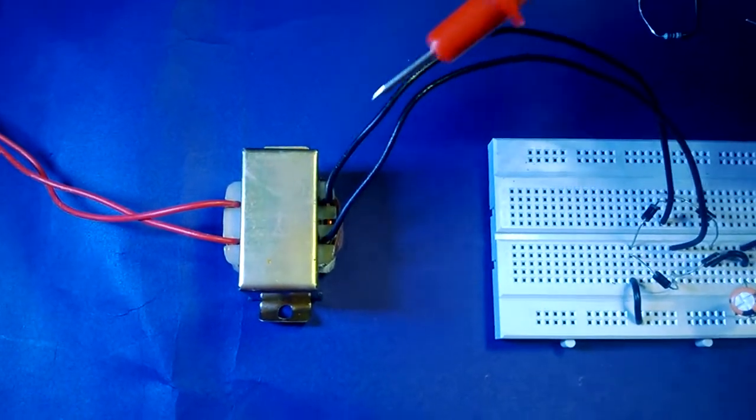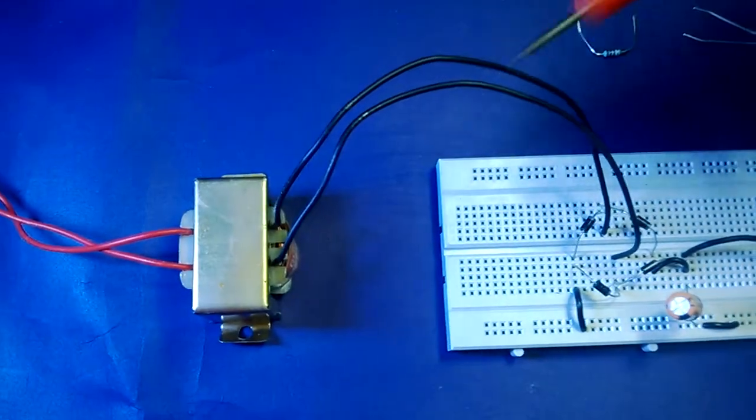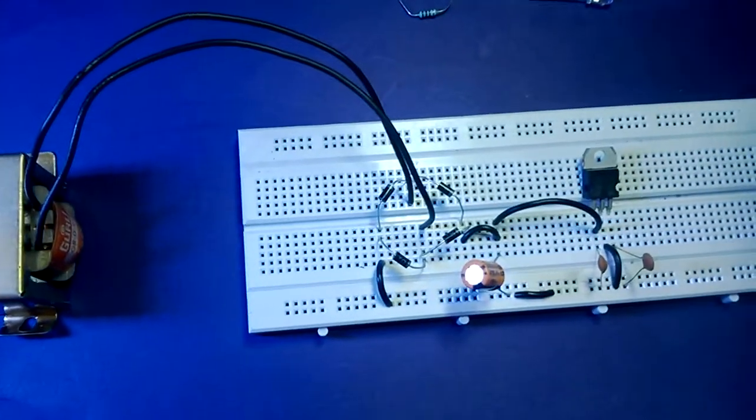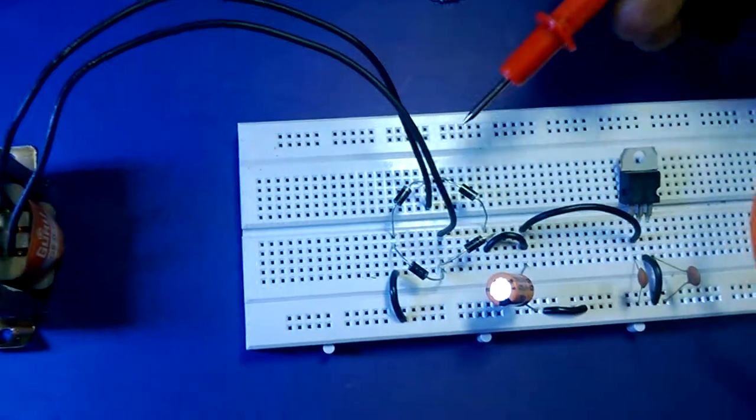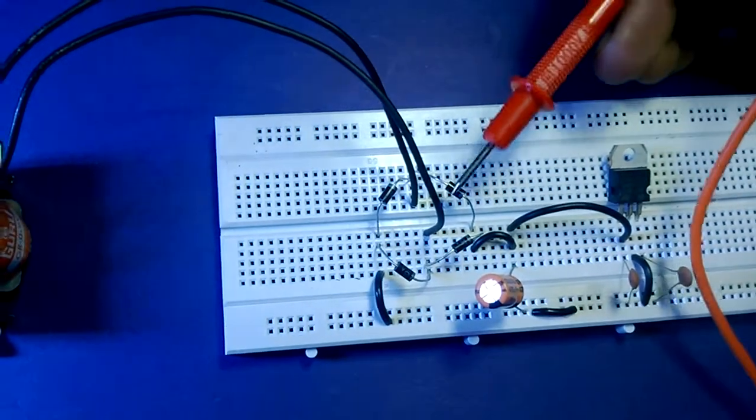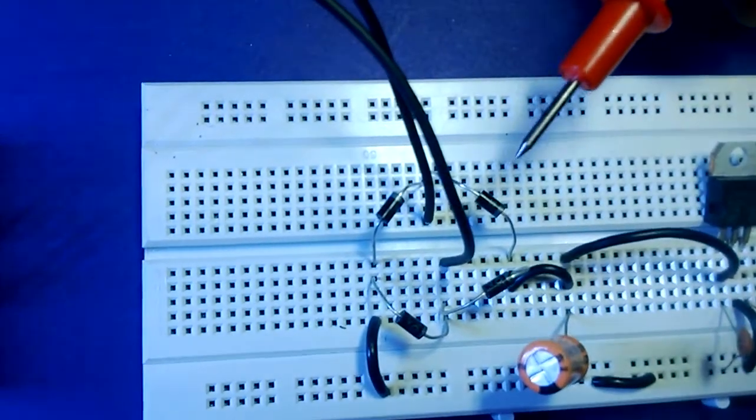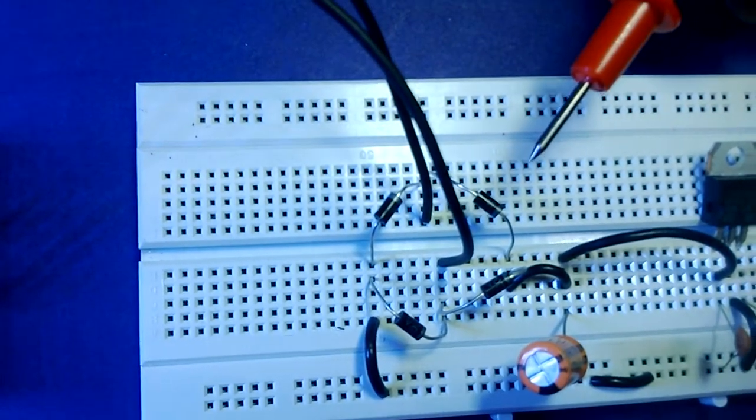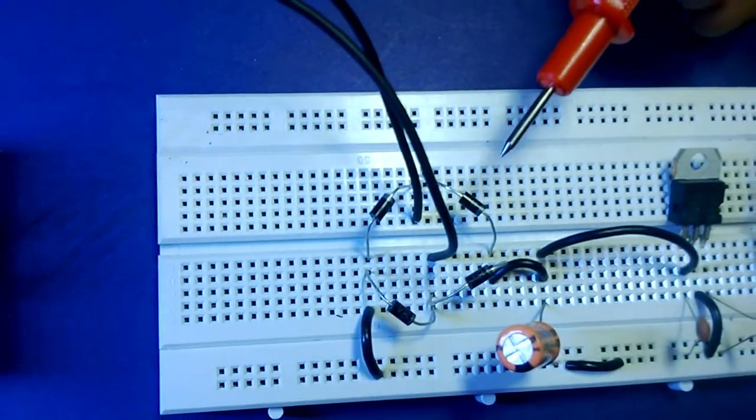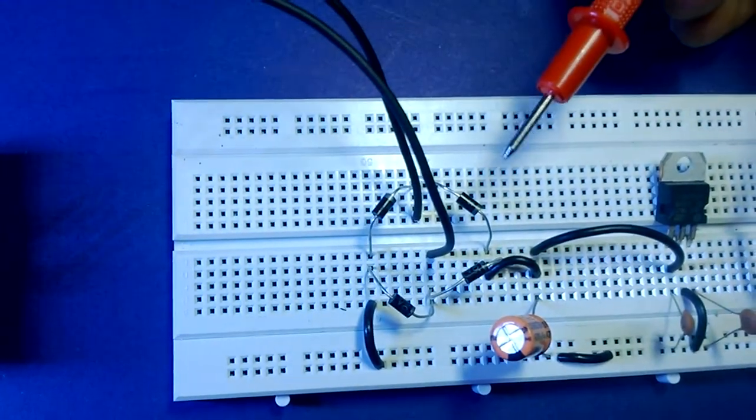Now coming to the second section, which is the rectifier section. You can look here - these are the four diodes which are giving us a DC output of 9 volts. As we know, this DC is not completely pure DC voltage.